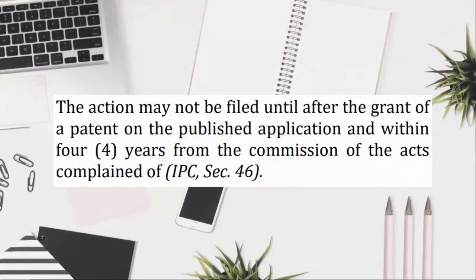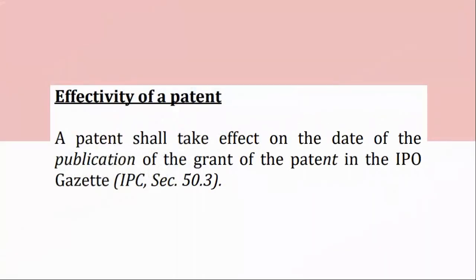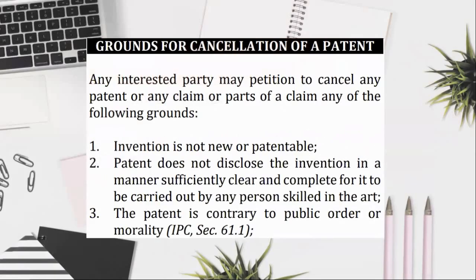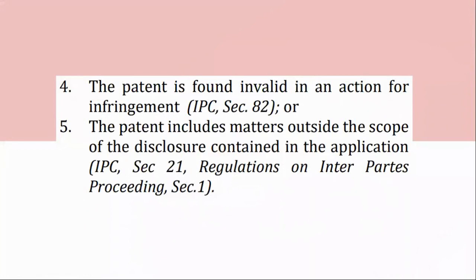Effectivity of a Patent: a patent shall take effect on the date of the publication of the grant of the patent in the IPO Gazette, IPC, Section 50.3. Grounds for Cancellation of a Patent: any interested party may petition to cancel any patent or any claim or parts of a claim on any of the following grounds: (1) invention is not new or patentable; (2) patent does not disclose the invention in a manner sufficiently clear and complete for it to be carried out by any person skilled in the art; (3) the patent is contrary to public order or morality, IPC, Section 61.1; (4) the patent is found invalid in an action for infringement, IPC, Section 82; or (5) the patent includes matters outside the scope of the disclosure contained in the application, IPC, Section 21, Regulations on Inter-Parties Proceeding, Section 1.